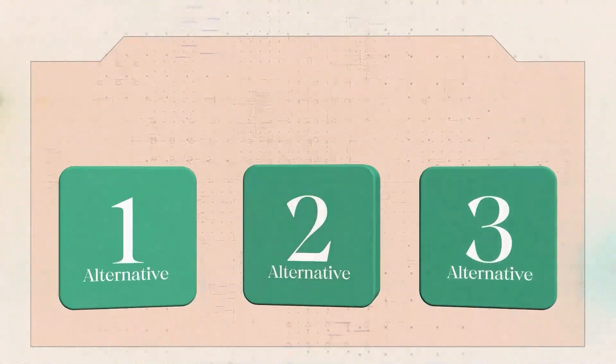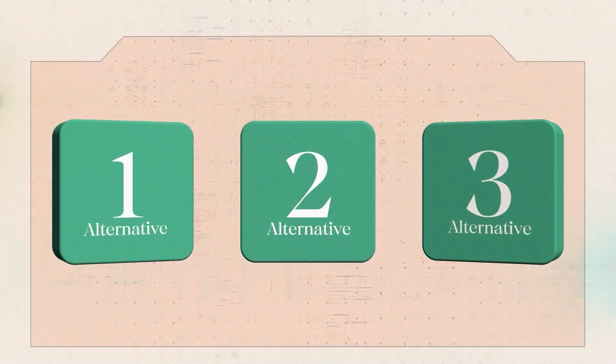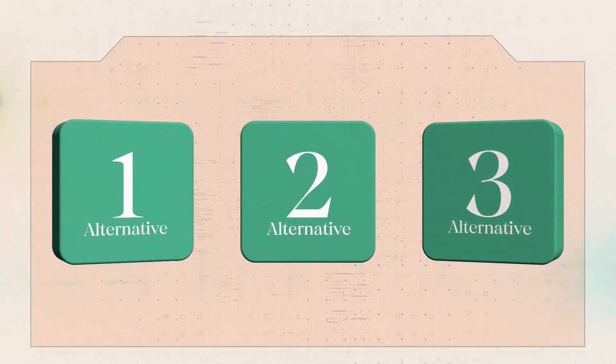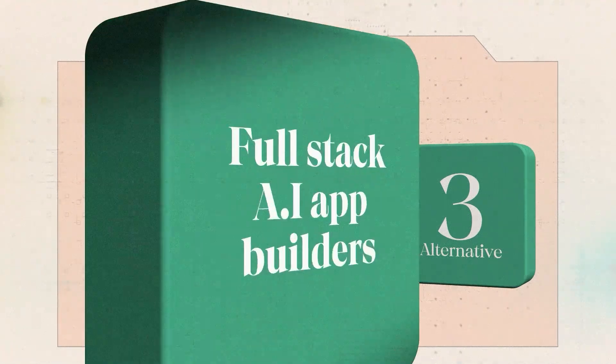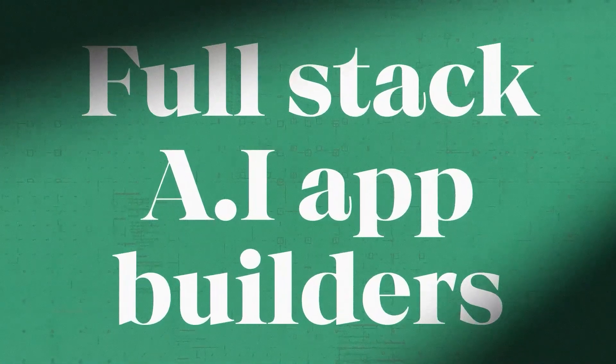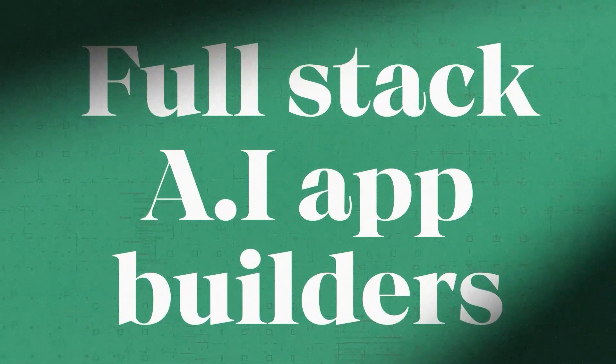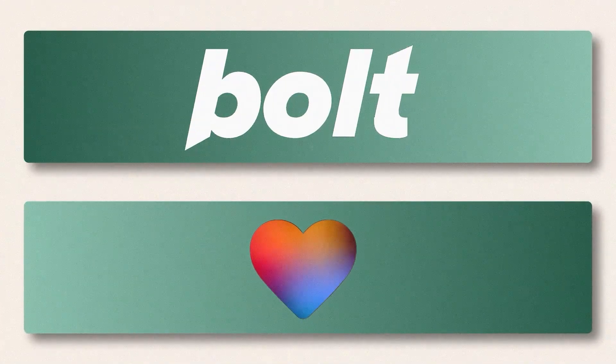But not to worry — we at Builder Central are not going to leave you hanging. We never do. So here are three better tools that you can try instead to do the exact same thing within minutes, and all without writing a single line of code. The first alternative we can suggest is full-stack AI app builders such as Bolt and Lovable.